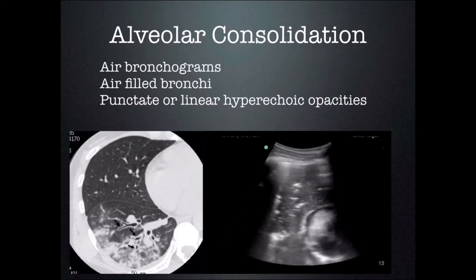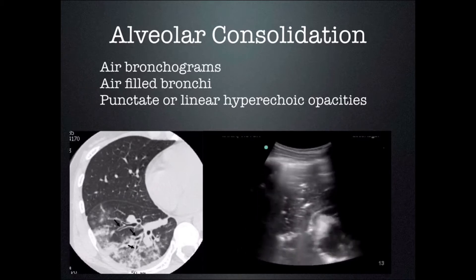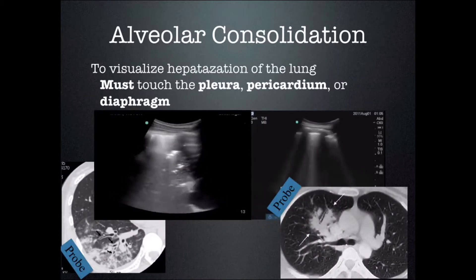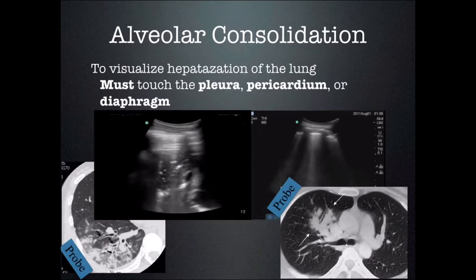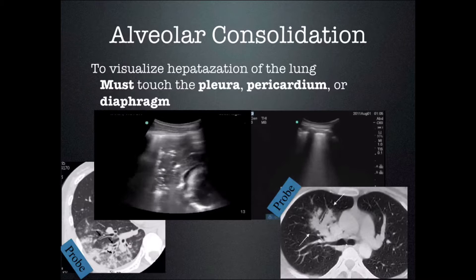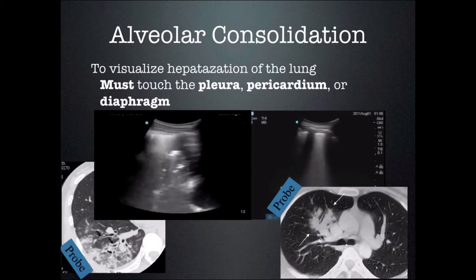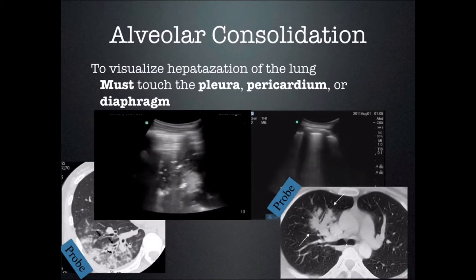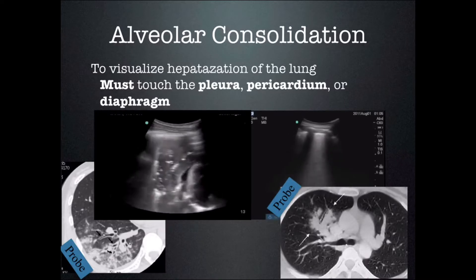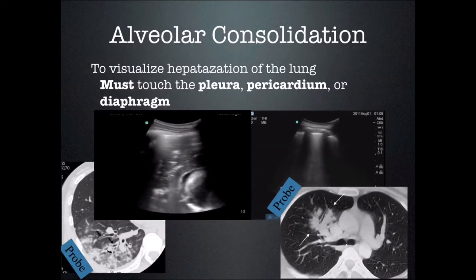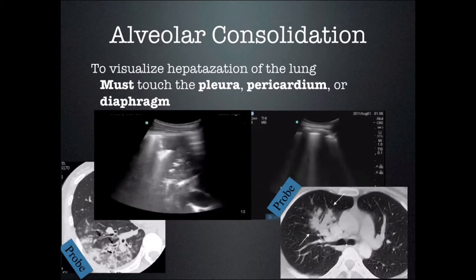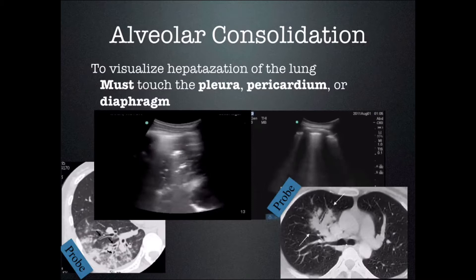I like to use the phased array probe because it is a high-contrast probe and makes these artifacts stand out and very visible when scanning quickly. For you to see the hepatization of the lungs or lobar pneumonia, the pneumonia must touch the pleura, the pericardium, or the diaphragm — it cannot have aerated lung around it. If there is normal aerated lung surrounding the pneumonia, we cannot see through it and cannot see the pneumonia.